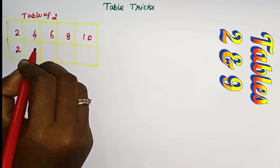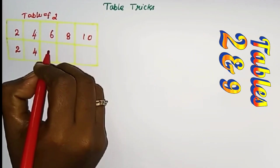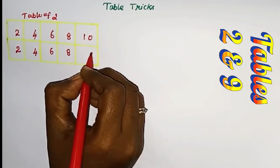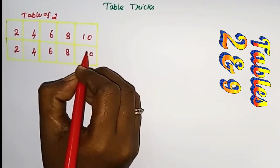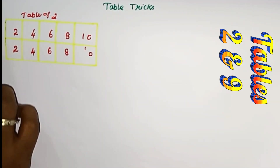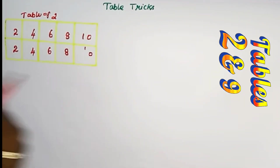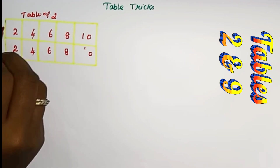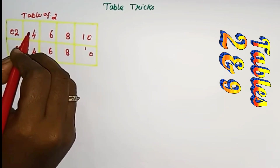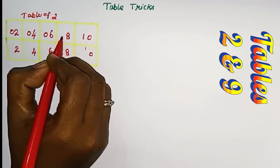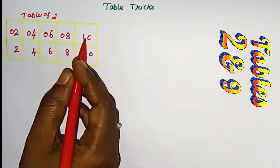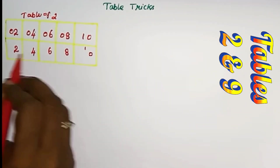2, 4, 6, 8, 10. First row you have to write 0. So 0, 0, 0, 0, 0. 0 plus 1 is 1.